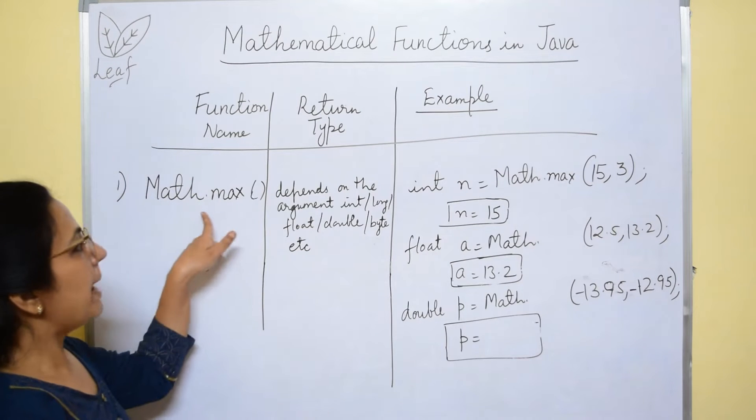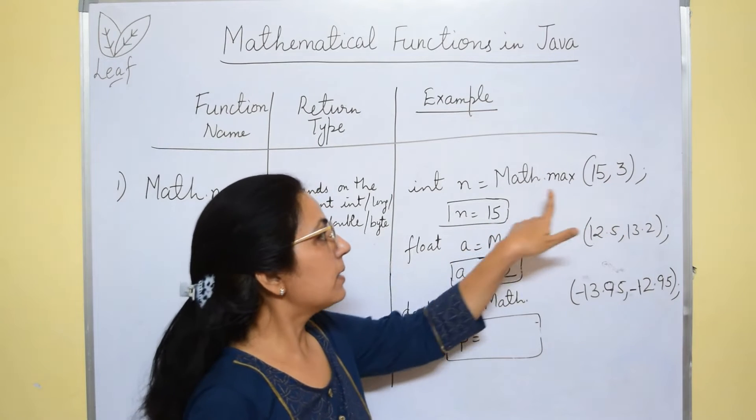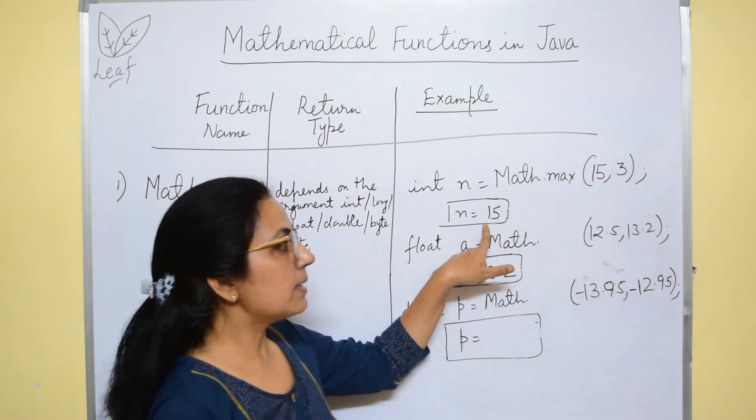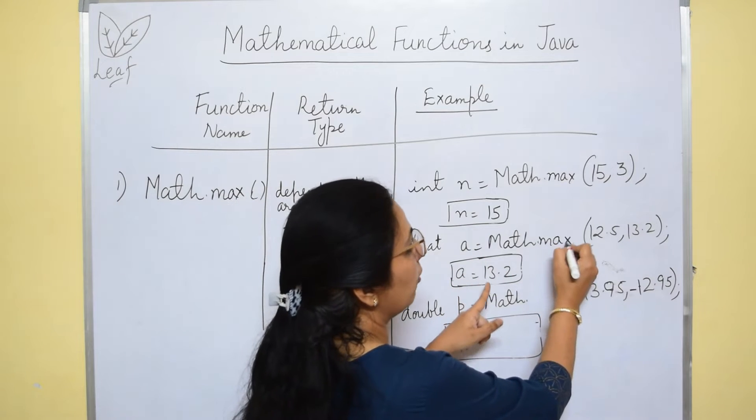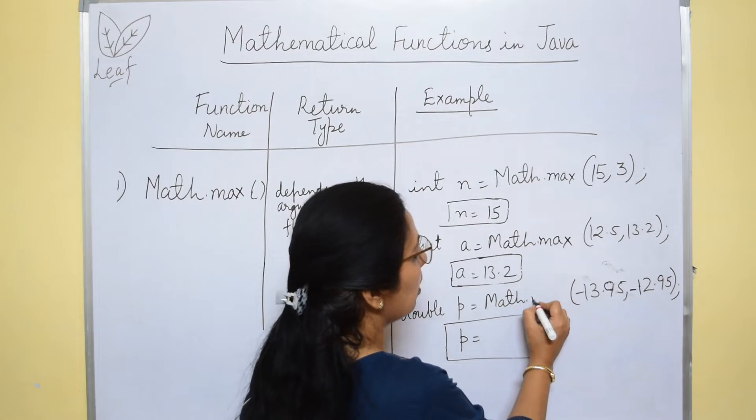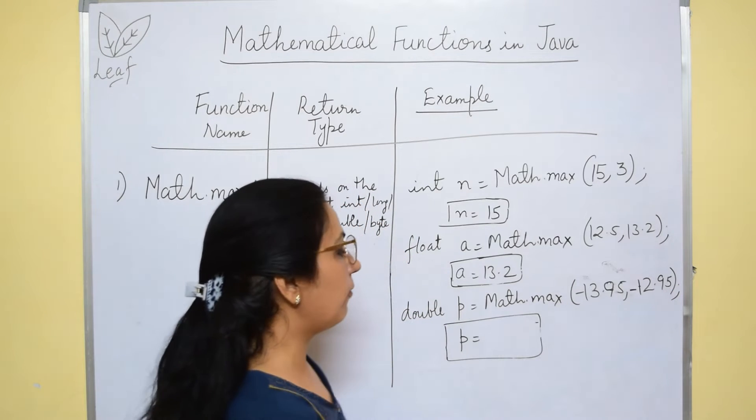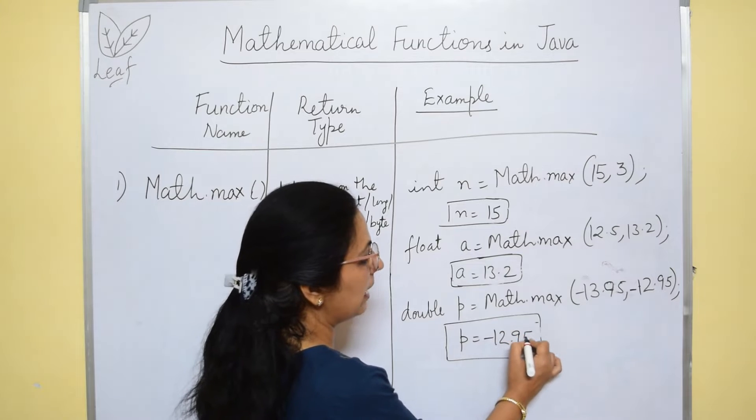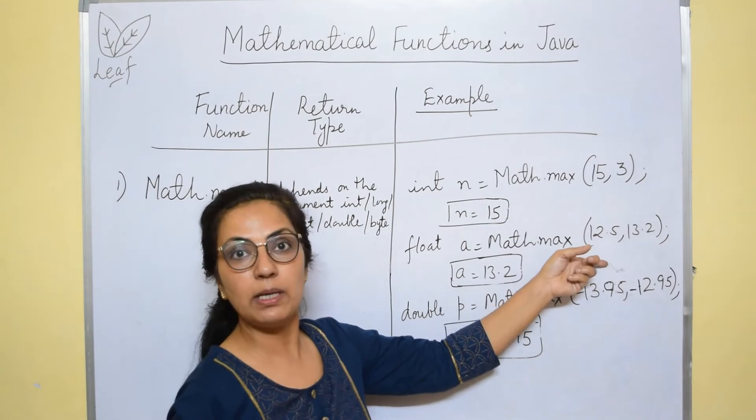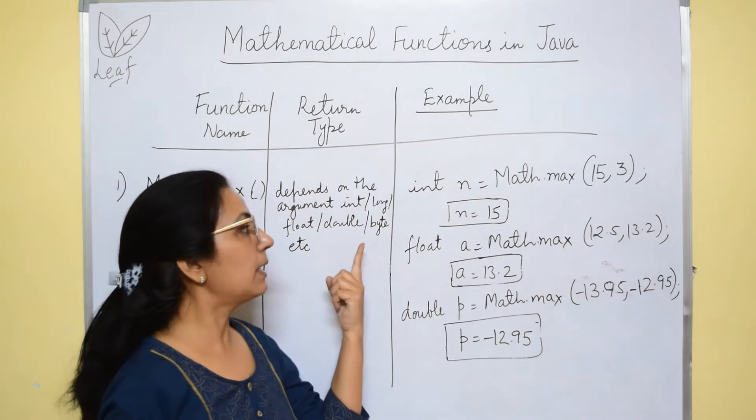Next, we have math.max function. Max for maximum. Maximum of two values is returned using math.max function. Max of 15 and 3, answer is 15. Math.max of 12.5 and 13.2, answer is 13.2. Math.max of -13.95 and -12.95, the answer will be -12.95. Again, for this function, the return type depends upon the argument type. Depending upon the argument which you are passing to this function, the return type will be.